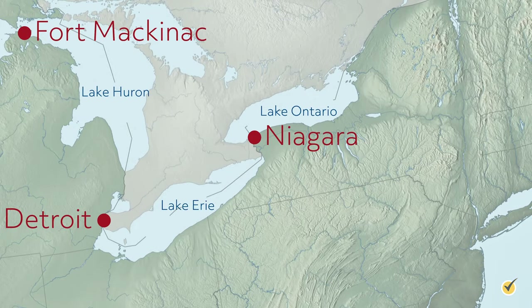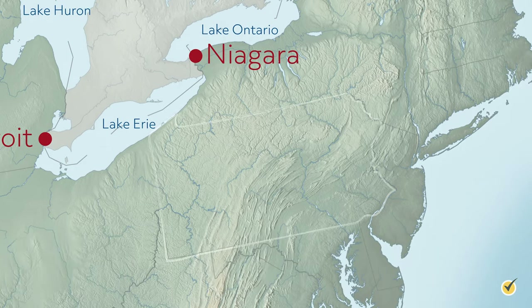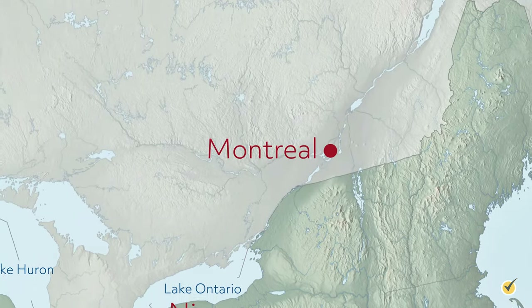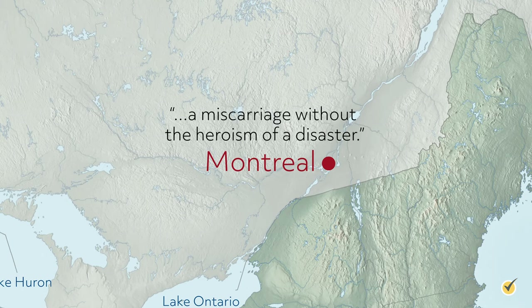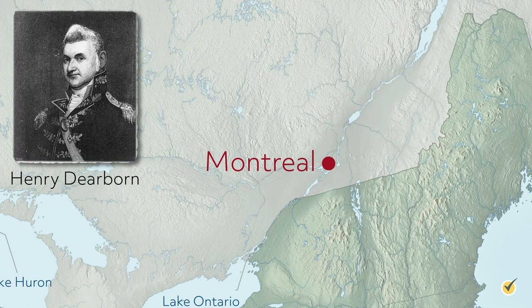The Niagara expedition fared just as badly. Only part of the force made it across the river, only to be caught by a British-Canadian counterattack. Pennsylvania militia also refused to leave American soil, leaving another American army to be taken with minimal British losses. As for the eastern thrust, it was, as one contemporary put it, a miscarriage without the heroism of a disaster. The group's leader, Henry Dearborn, never made it to Montreal, as recruits were hard to come by, and militia under his command also refused to cross the border.